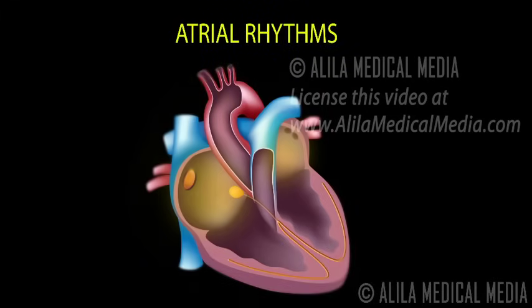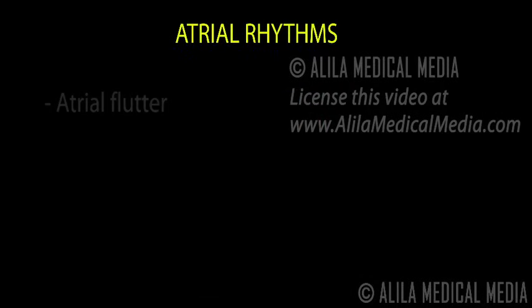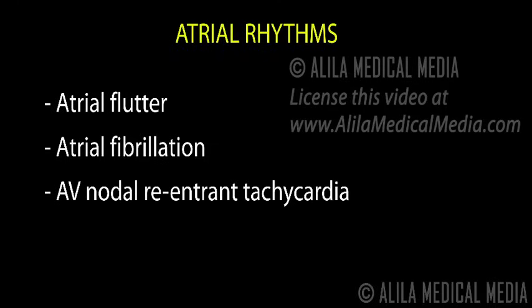Cardiac arrhythmias that originate from other parts of the atria are always clinical. The most common include atrial flutter, atrial fibrillation, and AV nodal reentrant tachycardia. These are forms of supraventricular tachycardia, or SVT.